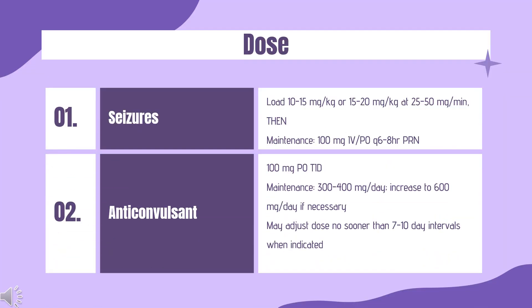Dose — Seizures: Status epilepticus: Loading dose 10–15 mg/kg or 15–20 mg/kg at 25–50 mg/min. Maintenance: 100 mg PO Q6–8 hours. Administer slowly, not to exceed 50 mg per minute.